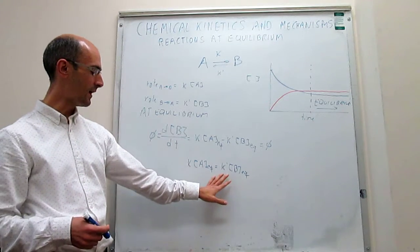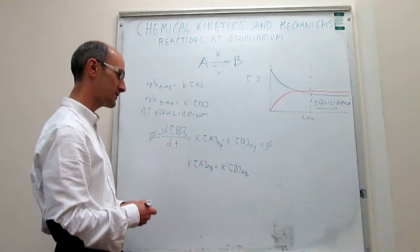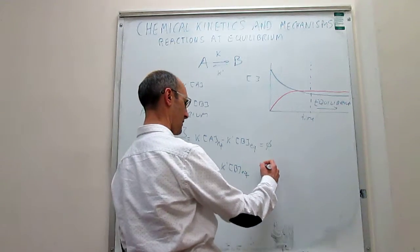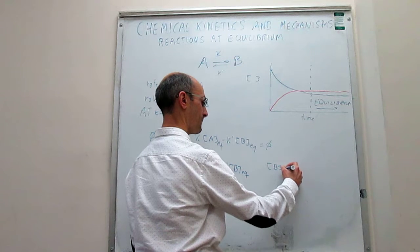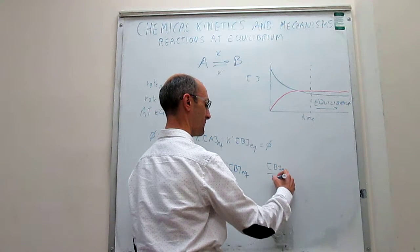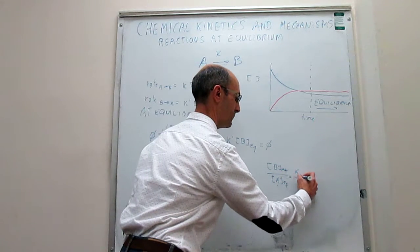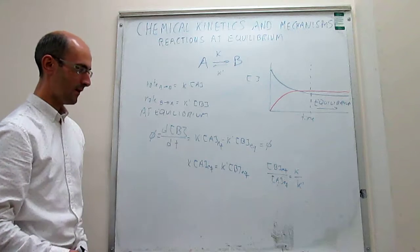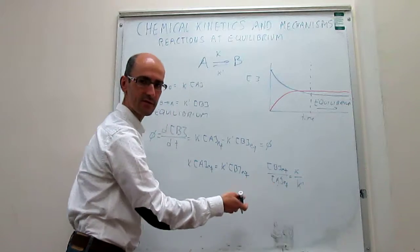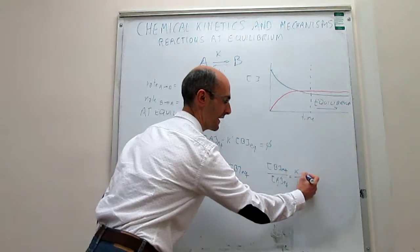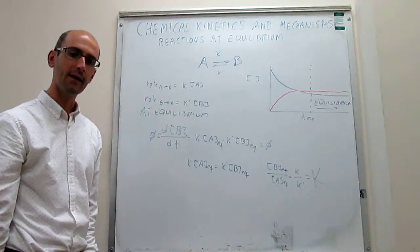Something interesting happens if you group together the rate constants and the concentrations. When we group together the concentrations, that would be the concentration of B at equilibrium over the concentration of A at equilibrium, and this is equal to K over K'. We also know from thermodynamics that if these are divided by the reference concentrations, that is actually the same thing as the equilibrium constant for the reaction, capital K.